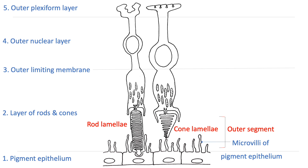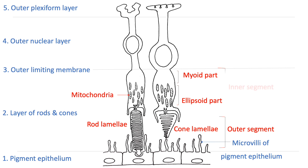The inner segments of rods and cones are made up of an inner myoid portion, which contains rough endoplasmic reticulum, Golgi complex, and free ribosomes, and an outer ellipsoid portion, which contains mitochondria. Both the outer and inner segments are connected by a narrow cilium surrounded by caliceal processes.